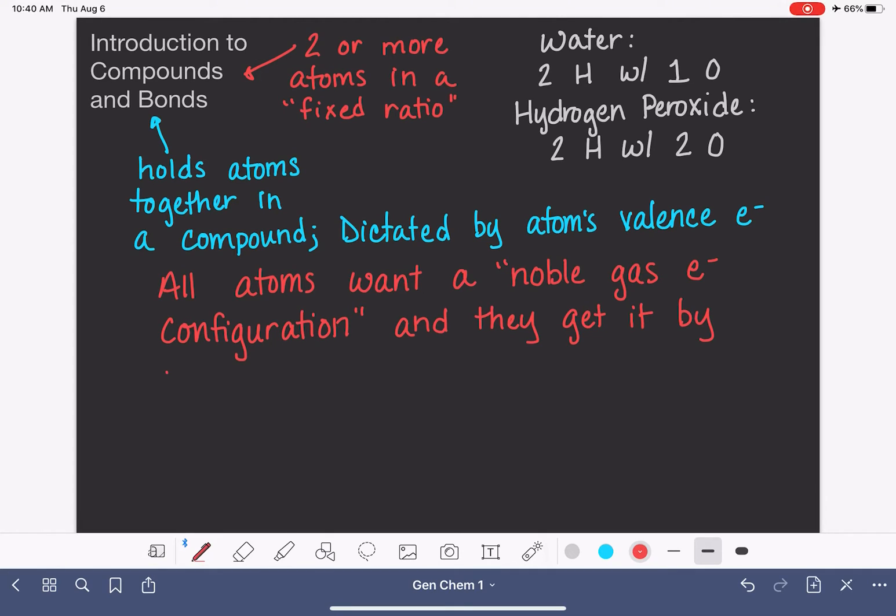by either ionizing, which we've already seen, or another option for them is bonding. They can also get a noble gas configuration by bonding.